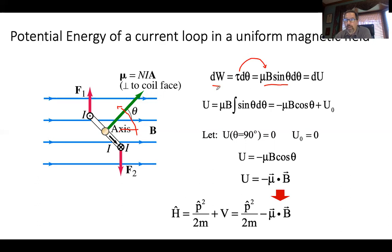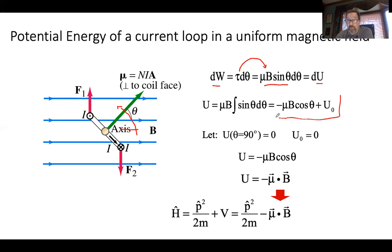I took the torque equation, mu cross B times sine of theta, and integrated to find the potential energy. Since I'm doing the work, I'm increasing the potential energy. If I let it go, it snaps back to align with the magnetic field. Integrating, I get a constant times minus the cosine of theta, plus a constant of integration from the indefinite integral.